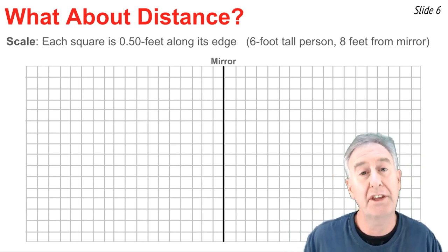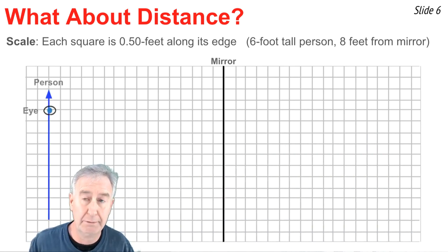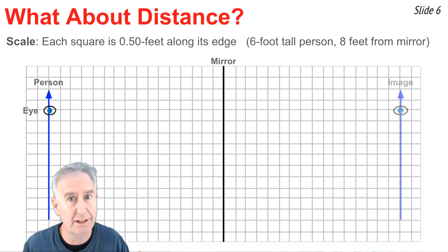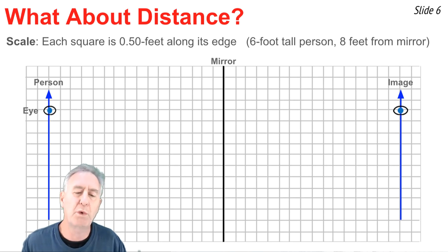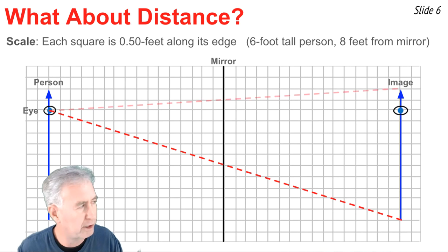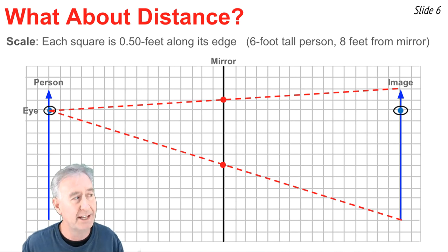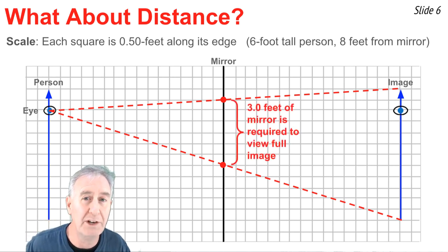This time with the person, maybe eight feet from the mirror, like right about here. And we need to draw lines of sight to the image location, which is way over there. And we'll draw the lines of sight from the eye to the bottom-most part of the image and to the top-most part of the image. And then we'll locate those two locations where the line of sight intersects the mirror. And that's how high and how low the person must look to view the entire image of the object. Then we'll count the number of squares.